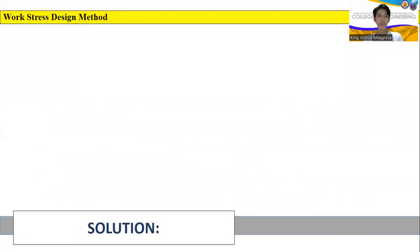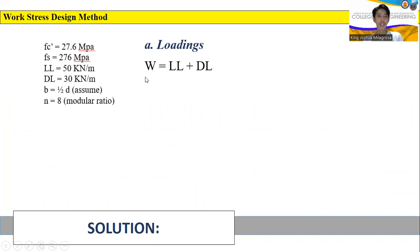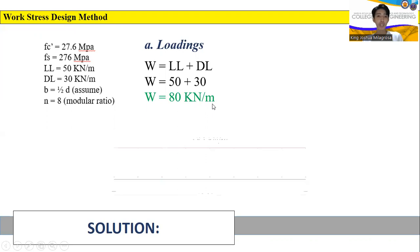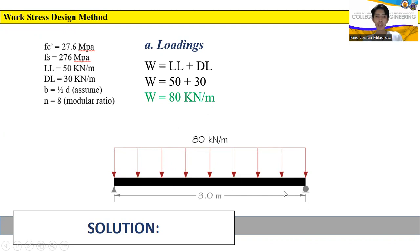For the solution, Part A: compute the loadings. First, we solve the uniformly distributed load, which is equal to live load plus dead load. Given the values, the live load plus dead load is 50 plus 30, giving us a uniformly distributed load of 80 kilonewton per meter. In the illustration, we have a simple beam with a length of 3 meters with the UDL of 80 kN/m acting on it.